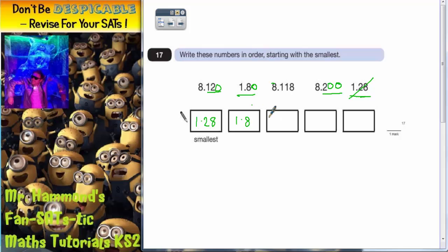Let's just cross off the 1.8 first. So 8.118 is the next smallest, then we've got 8.120 because 120 is smaller than 200, and then we've got 8.200.